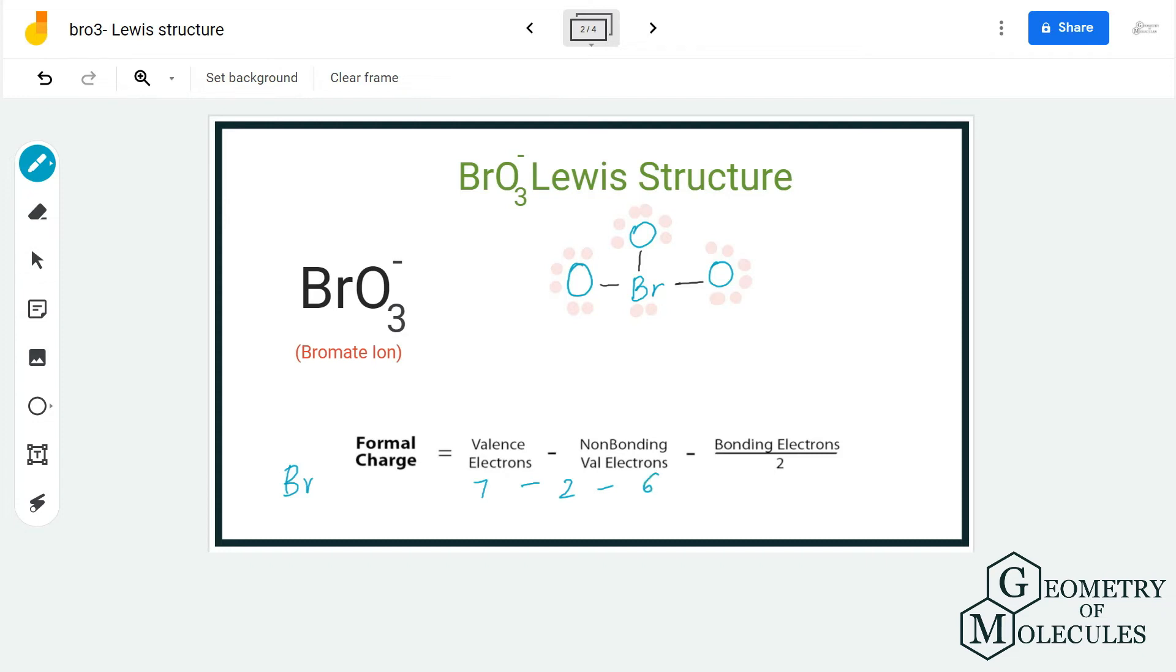Doing that, we get a formal charge of +2 for bromine and -1 for oxygen. You can either use this formula or check out our formal charge calculator linked in the description below. Bromine has a charge of +2 here, and in any Lewis structure we try to minimize charges.